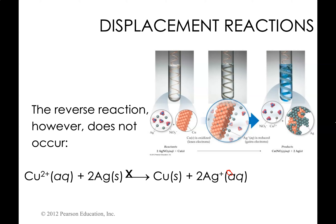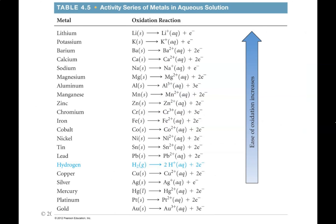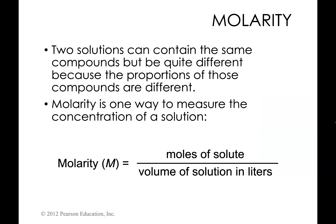If we tried to flip the reaction around, the reverse reaction would not occur — this is because of the activity series. In the activity series, copper is directly above silver. Because silver is doing the oxidizing in the first reaction, it must be below the thing it plans to oxidize. When reversed, silver would need to be oxidized by copper, which is above it, so the reverse oxidation will not happen.